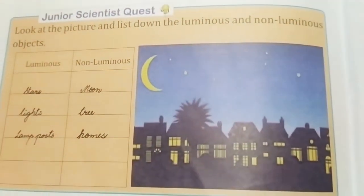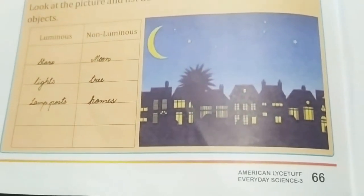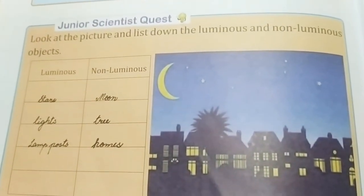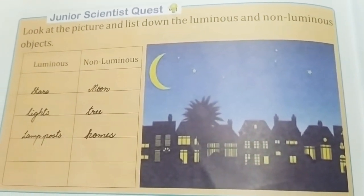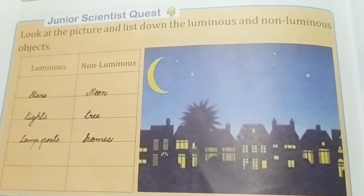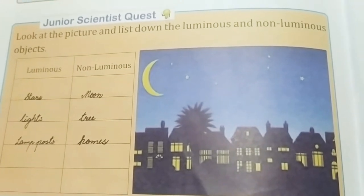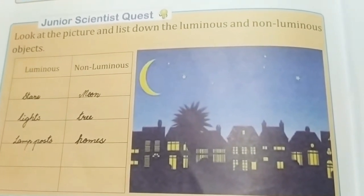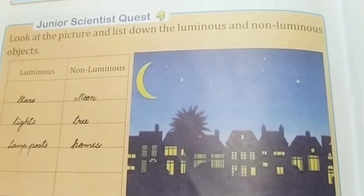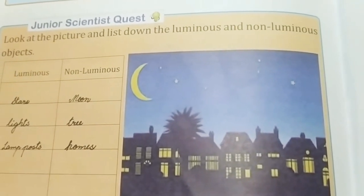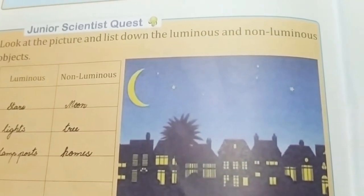In the Junior Quest on page number 66, they show a picture and ask you to find out what are luminous and non-luminous things. Stars, lights, and lamp posts are luminous things. Non-luminous things include the moon, tree, and homes.